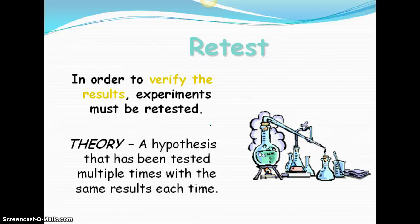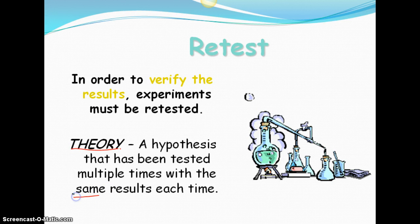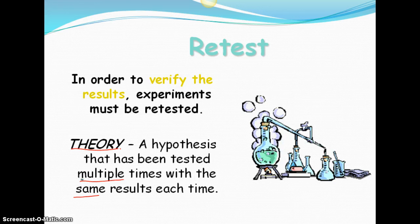The next thing would be to retest. And usually we do this to verify the results. So if we find the results happen once, we can't conclude that that is a definite result every single time that we expose the salamanders to the pollutant. Or if we're doing some other type of test that it's going to be that result every single time. So we have to retest to be sure that that is something that will happen every time. A theory then is when a hypothesis has been tested multiple times and they get the same result. So multiple times, same result. And that's when something can become a theory.